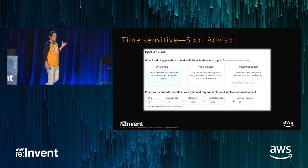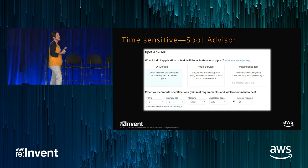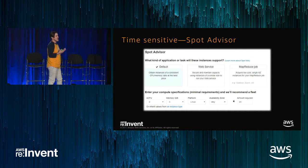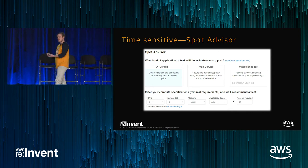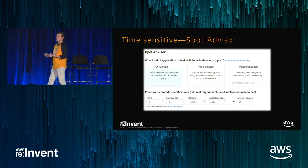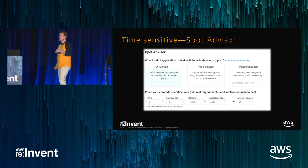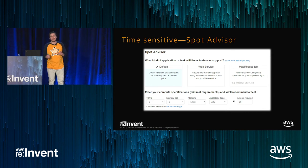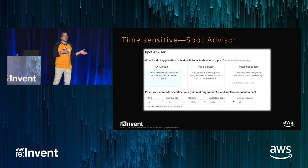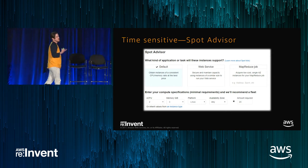When you're getting started with Spot, there's a really easy tool to start playing with. You can put in the specifications that your application would ideally run on, tell us at a high level what type of application you run, and we'll automatically generate a Spot Fleet based on historical prices that best suits your application and needs.